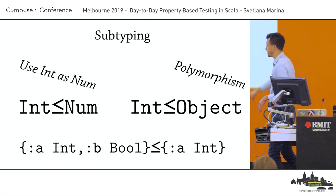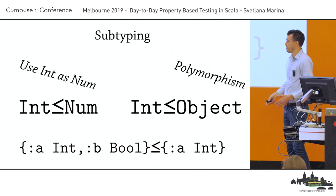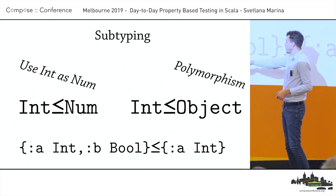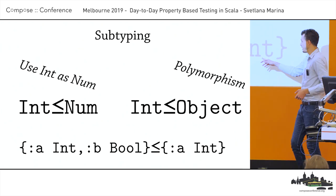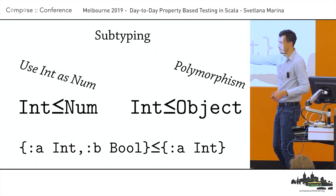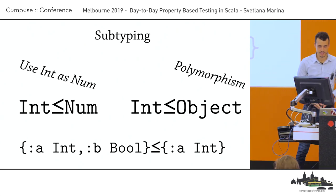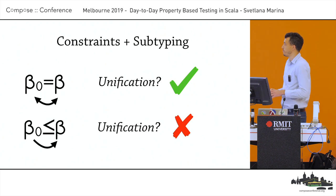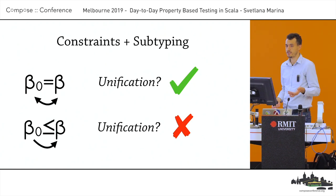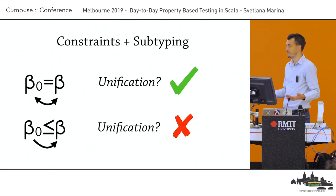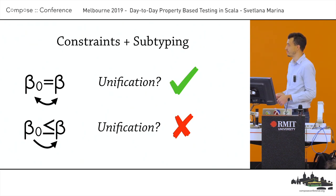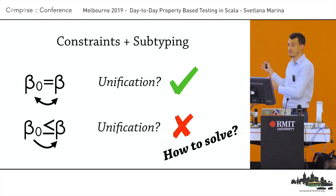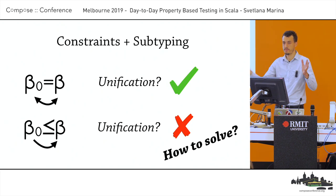A subtyping judgment has the more specific thing on the left and the less specific on the right. For example, if you have a record with entries A and B, you can use it in a context that only requires A. The big problem with using subtyping alongside global type inference is that we can no longer use unification — we'd need to find some other way of solving those constraints. That's a big part of global type inference, so incorporating subtyping requires a fundamentally different constraint-solving approach.